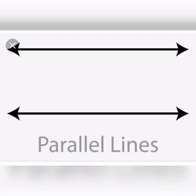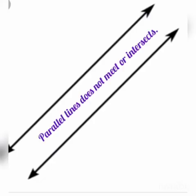Next, parallel lines. Parallel lines are lines that are the same distance apart but will never meet or intersect. They travel in the same direction but two parallel lines never meet. A common example is a railway track — the two rails are parallel lines that never meet.